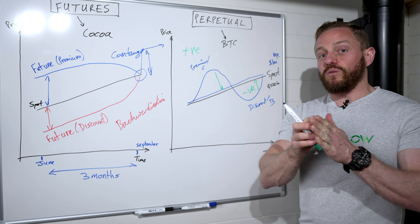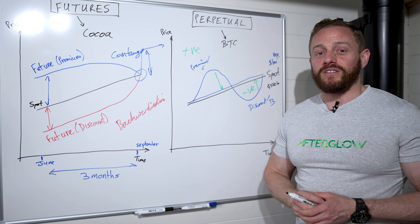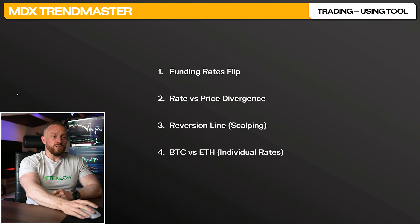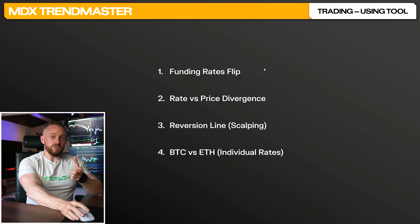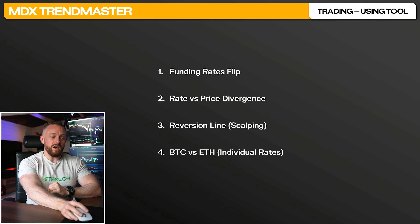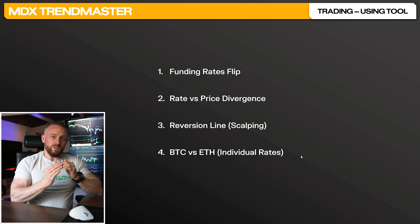We can now look at how to use this in our trading. I've boiled this down to four strategies: number one, we can look at flips in the funding rate from positive to negative or vice versa; two, we can look for divergences between the rate and the price; three, we can use the reversion line to forewarn reversals, particularly for scalping; and number four, for advanced traders, we can look at discrepancies between funding rates on Bitcoin versus Ethereum.